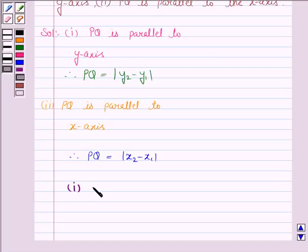Hence, the distance between P and Q is mod of y2 minus y1 if PQ is parallel to the y-axis, and the distance between P and Q is mod of x2 minus x1 if PQ is parallel to the x-axis. This completes the question. Hope you enjoyed the session. Goodbye and take care.